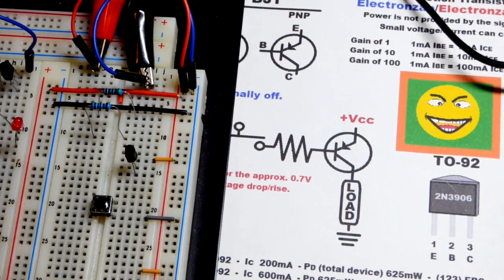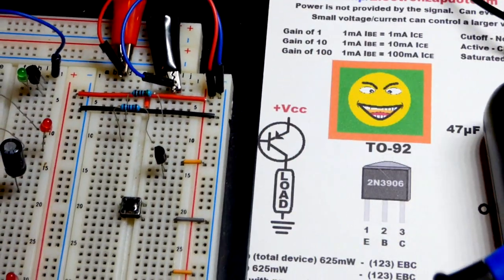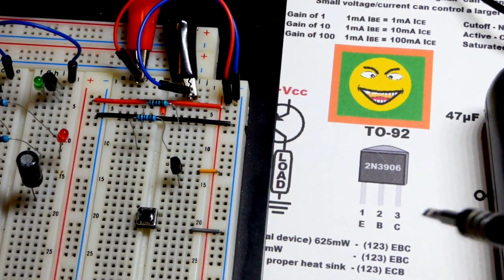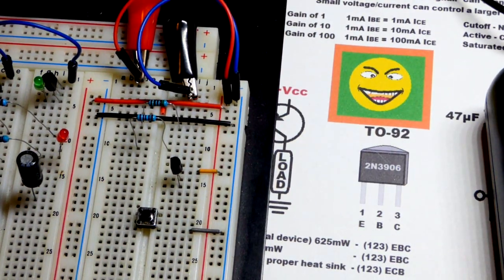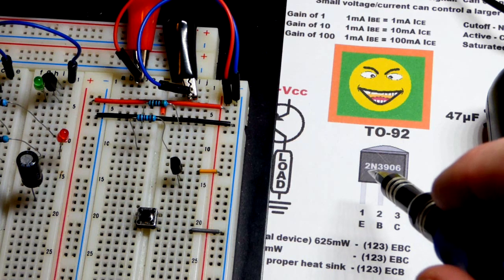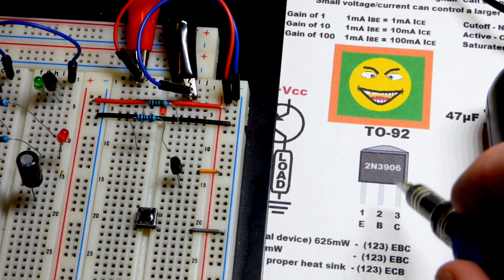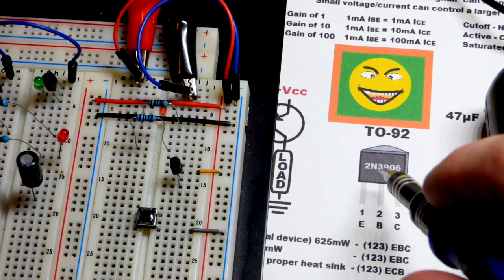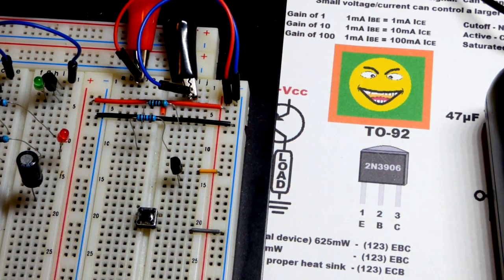To begin with, the transistor itself, we have it here, 2N3906. I already put the pin layout right there. It's the same - it has a 2N at the beginning. Just like the 2N3904, which is the NPN version of the 2N3906, they're made basically the same except for opposite chemistries when it comes to P-type material and N-type material.